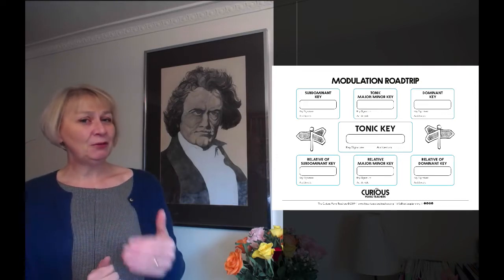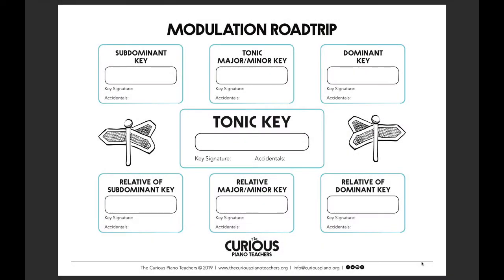So here's how to fill it in. Here is a blank modulation road trip, and this has got on it the likely keys that most composers will use. We've got the tonic key in the center — that's our home — and then we might go to the dominant key or possibly to the subdominant key. Other likely keys then are the relatives of these: the relative of the dominant key, the relative of the subdominant, and of course the relative of the tonic key itself.